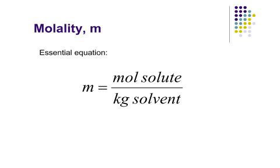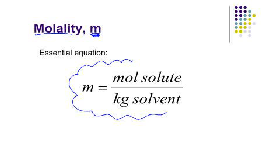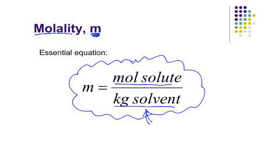Molality is given the symbol lowercase m, and I've got the equation on the slide for you. This is definitely an equation you should memorize — it's not that hard. Molality is defined as the moles of solute over kilograms of solvent. The denominator is just the solvent alone and it must be in kilograms, so if you've got grams, divide by a thousand to get kilograms.